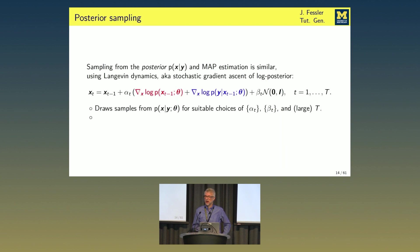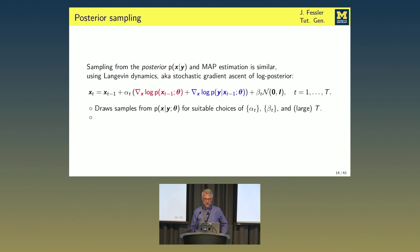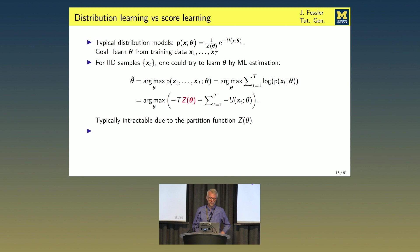That was just to draw samples from the prior. I'm more interested in drawing samples from the posterior, which is a relatively simple modification where we need both the score function and the gradient of the log likelihood. In my applications we know the gradient of the log likelihood because it's a human-designed system. If you run this multiple times, you end up with samples from the posterior that you can use to quantify uncertainty. In both cases, what we need is a score function. If you have a model already, you can compute the gradient of its log. But typically all you have is training data, so the question is how to learn a score function from training data.